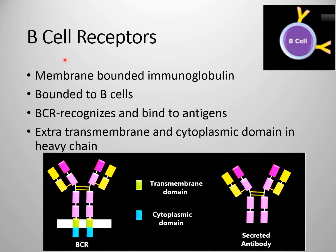B cell receptors are present on B cells and are actually membrane-bounded immunoglobulins or antibodies. Their primary function is to recognize and bind to antigens. If we compare a B cell receptor to a secreted antibody, you can see they are the same except that the B cell receptor has an additional cytoplasmic and transmembrane domain — shown here as the green and blue regions — which helps the B cell receptor attach to the B cell.